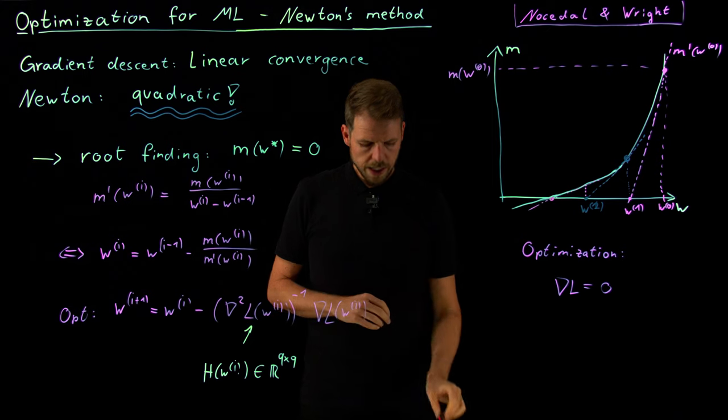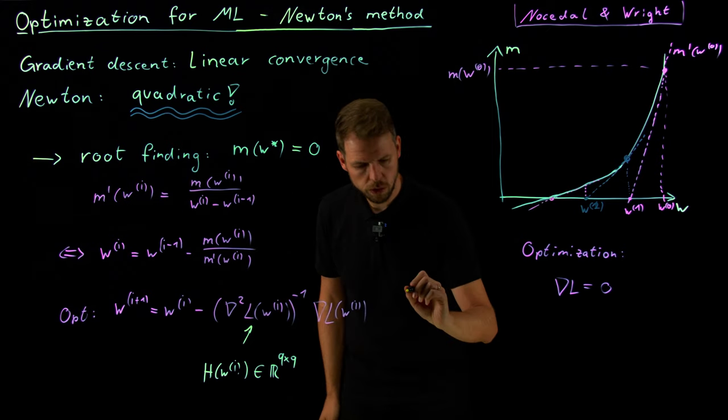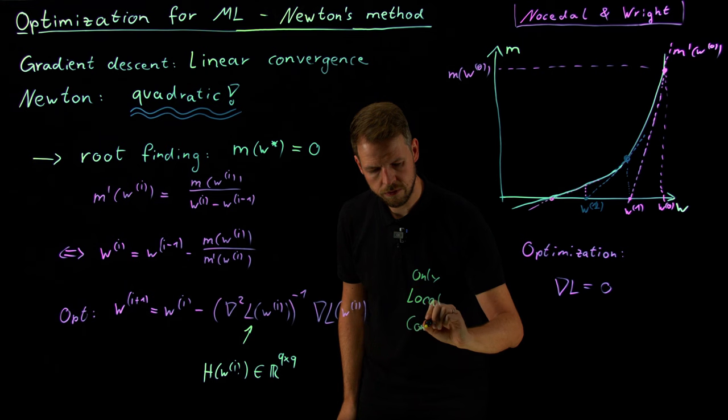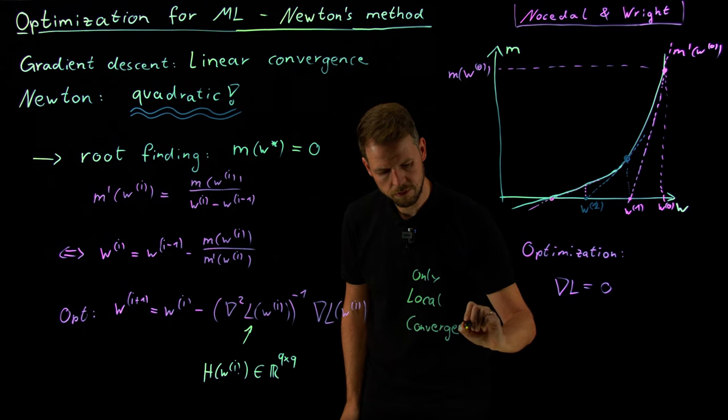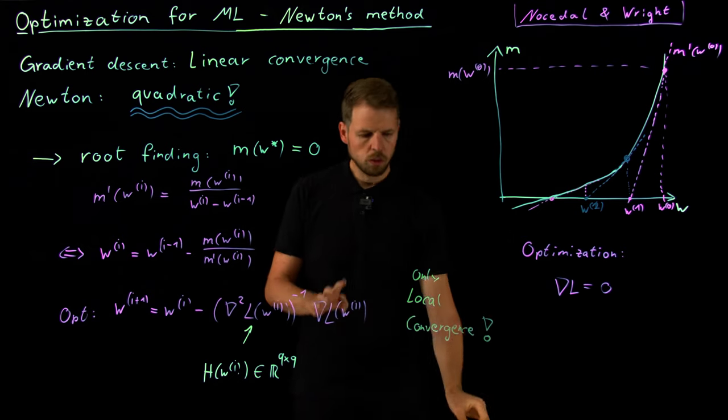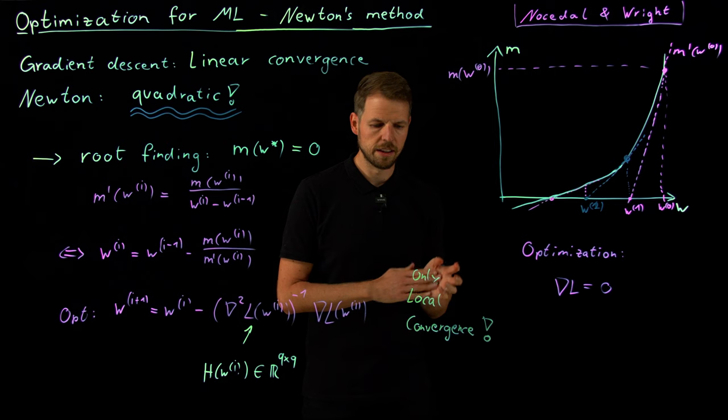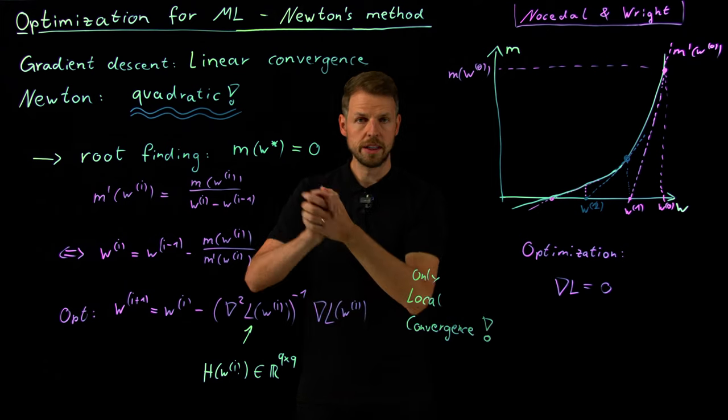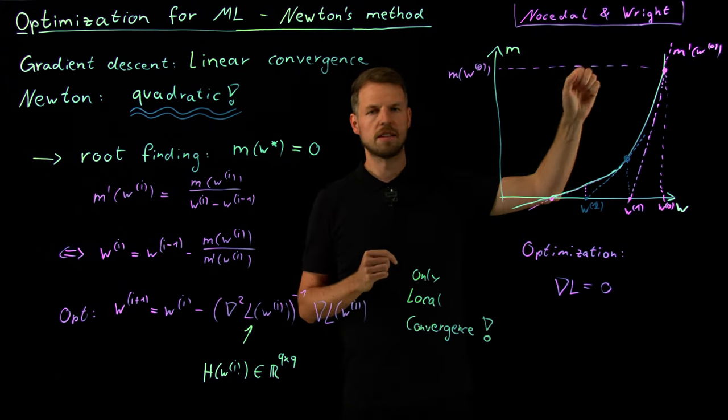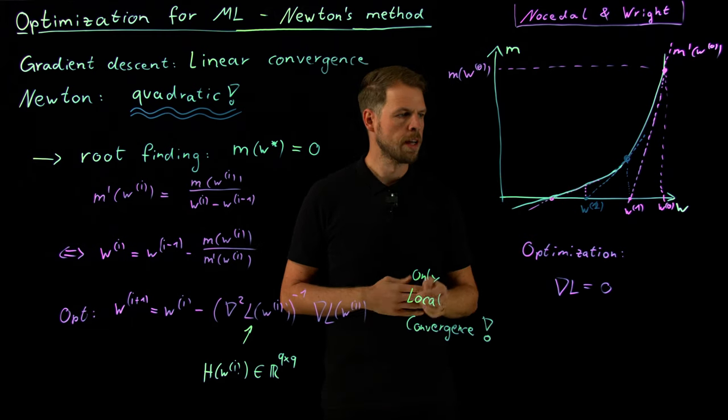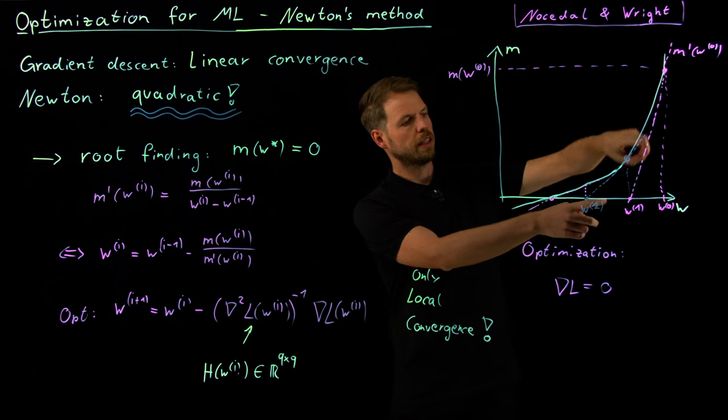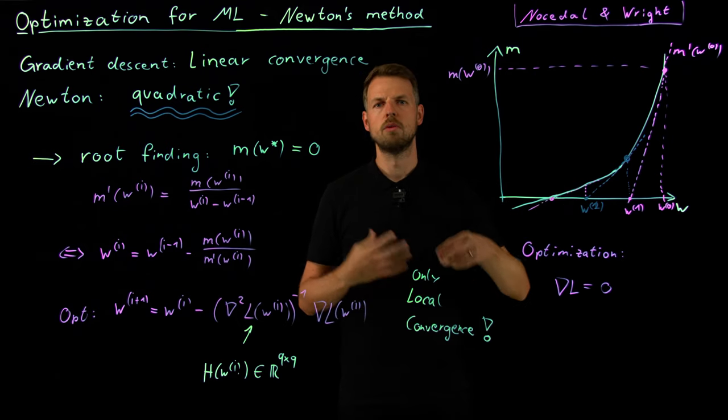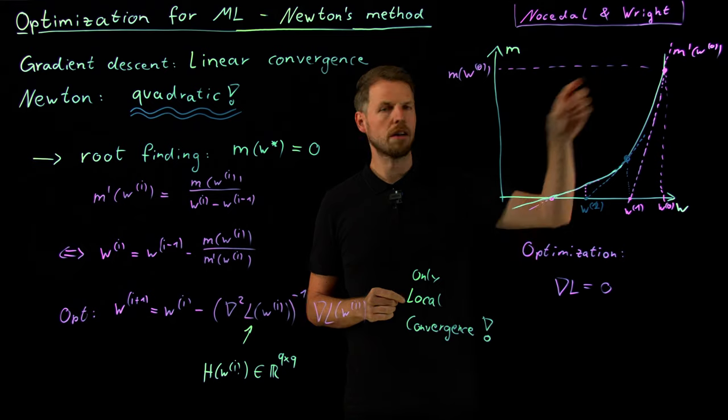However, there are also a few issues with this. And one very important issue is that this has only local convergence. And do not confuse this with a convergence to a local minimum as we had it in gradient descent. This really means the Newton algorithm only converges to a root or the root of the gradient if you start sufficiently closely. But in gradient descent we didn't have this. You start somewhere, you go downhill until you end up in a local minimizer.